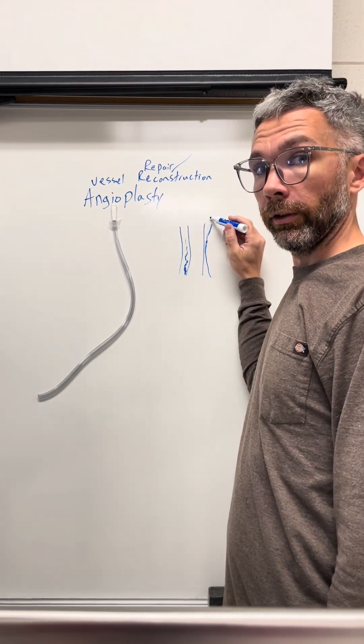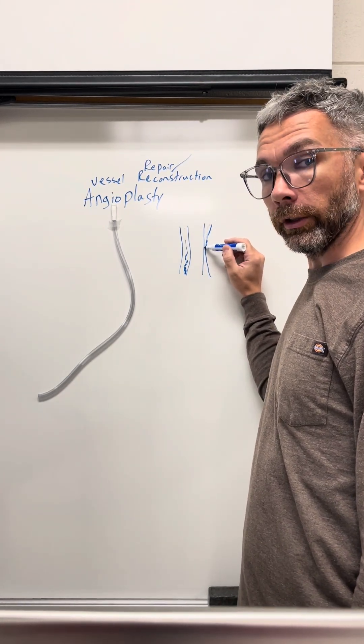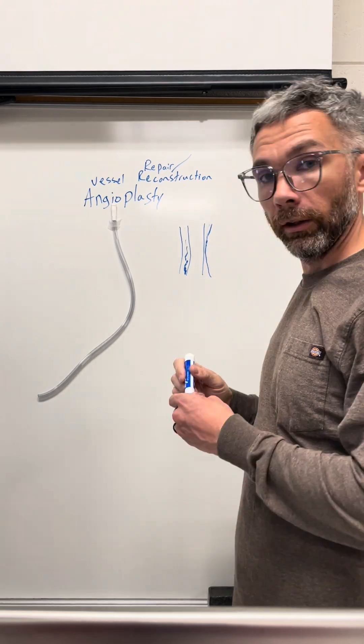So if it looks like this, you would be able to see that the vessel gets smaller here and constricts down. So how do you fix that?